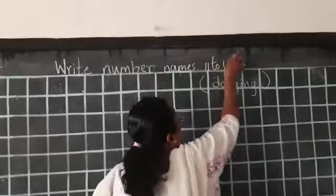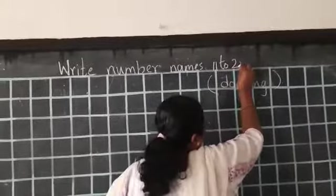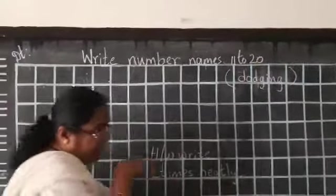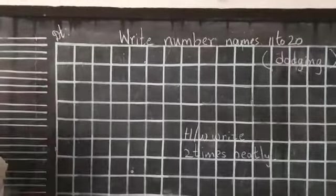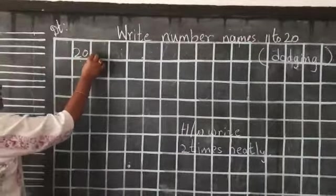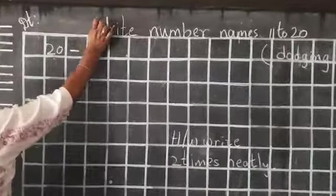We are going to do 11 to 20 now, okay children. So first one is in this block, second is 20. Write this down, okay.